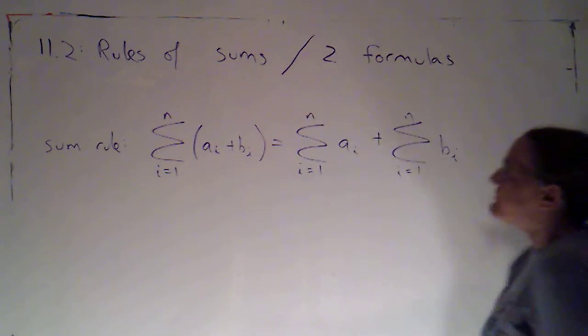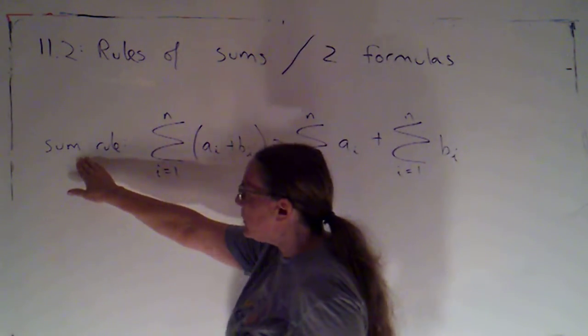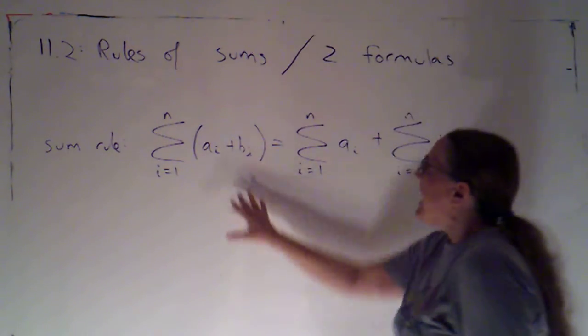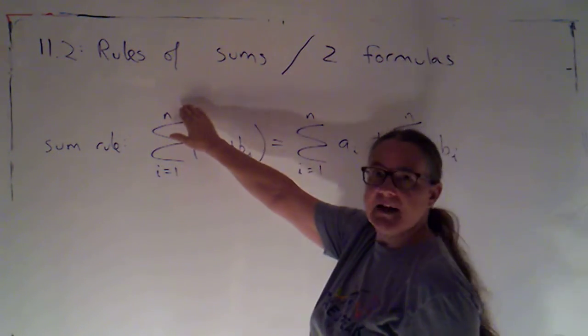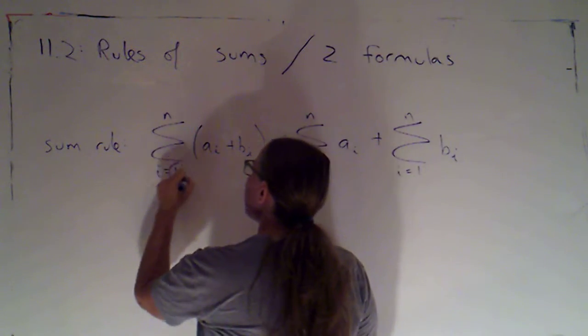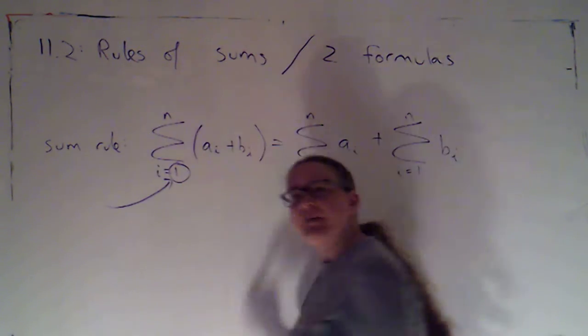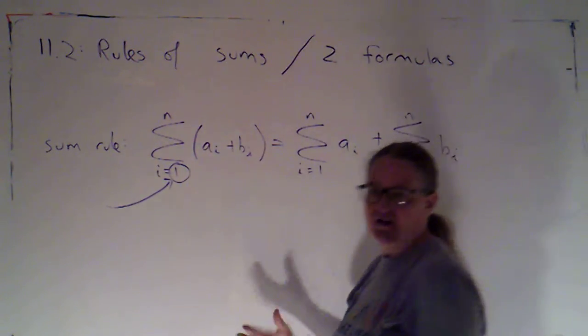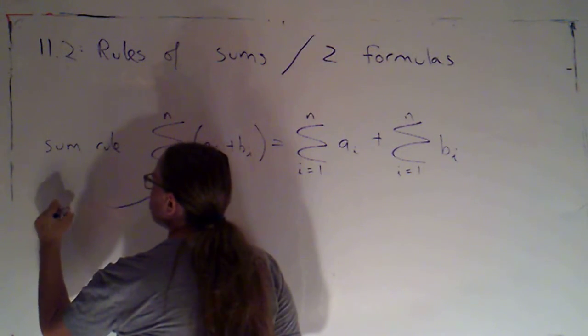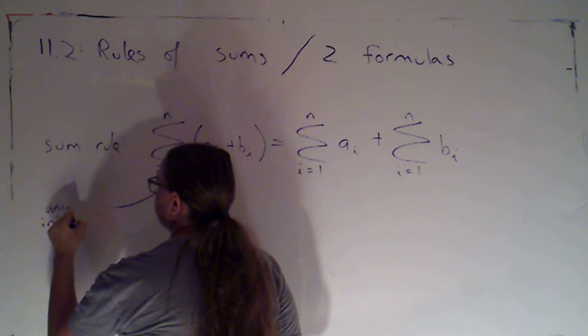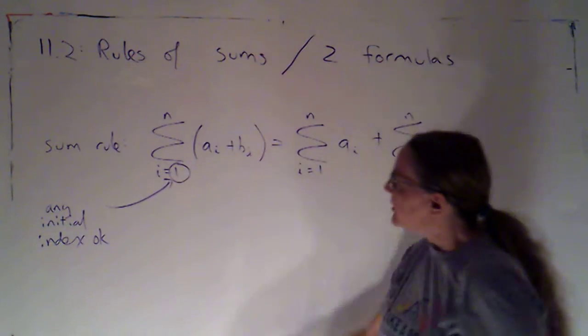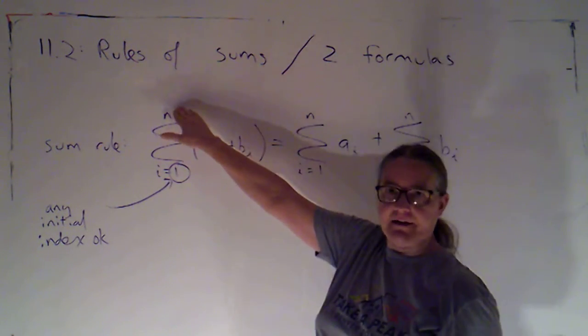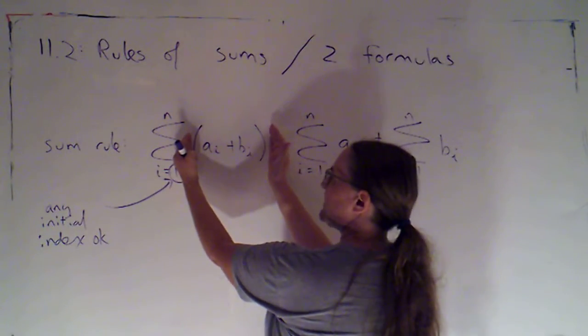Alright, so the first rule is the sum rule for sums, and it says this. If I'm taking the sum as i goes from 1 to n, now here it does not matter that my initial index is 1. Any initial index is okay. So I've got an initial index and I've got a final index. And then here are the terms that I'm adding up.